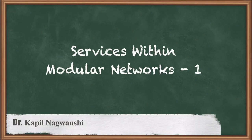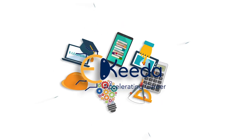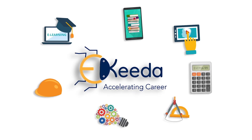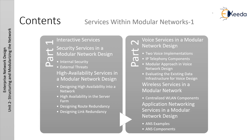Hello students, hope you are doing well. In this video we are going to discuss services within modular network 1, for the subject enterprise network design of B7 semester, IIT University of Mumbai. The module is divided into part 1 and part 2. In part 1 we will discuss interactive services, security services in modular network design, internal security, external threats, high availability services, designing high availability into a network, high availability in the server farm, designing root disk redundancy and designing link redundancy.